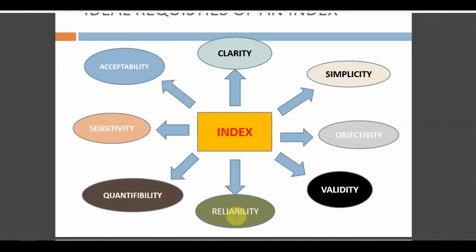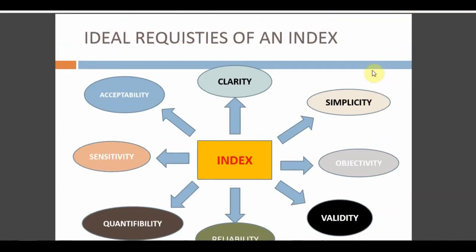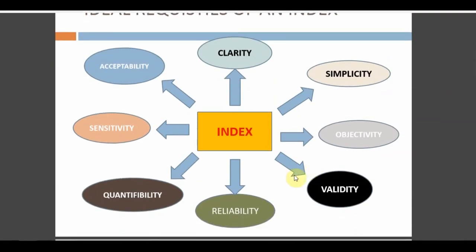Reliability includes inter-examiner and intra-examiner reliability, calculated using kappa statistics and should be more than 0.8 or 80%. Training and calibration must be done before actual examination. Validity means the index should measure what it intends to measure — we have face validity, content validity, and construct validity. For questionnaire-based indices, all three types of validity must be checked before applying. These are the ideal requisites: clarity, simplicity, objectivity, validity, reliability, quantifiability, sensitivity, and acceptability.